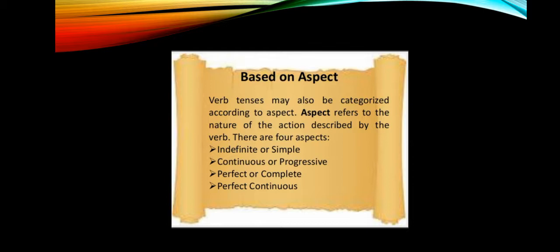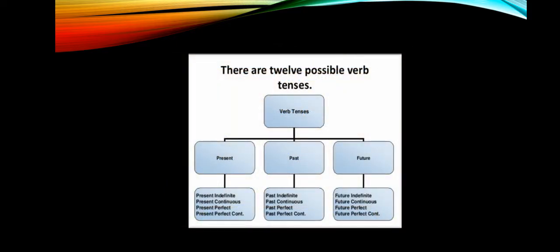Based on aspects, tenses may also be categorized further. Aspects refer to the nature of the action described by the verb. There are four aspects: simple or indefinite, continuous or progressive, perfect or complete, and perfect continuous. These give us twelve possible verb tenses in total across present, past, and future.